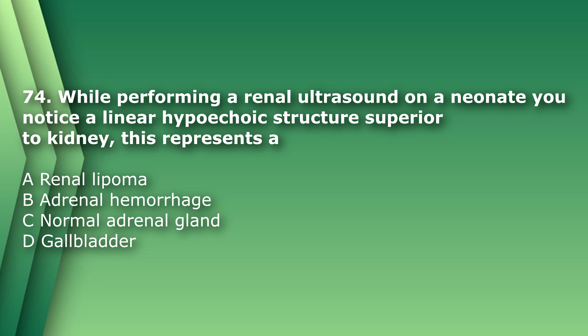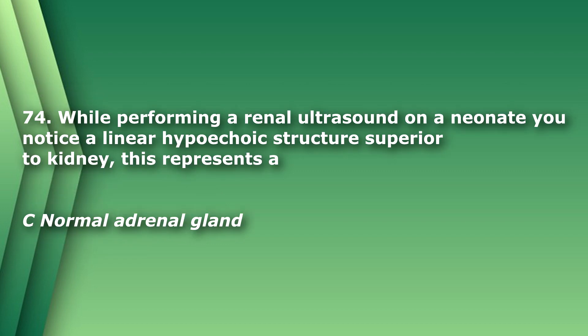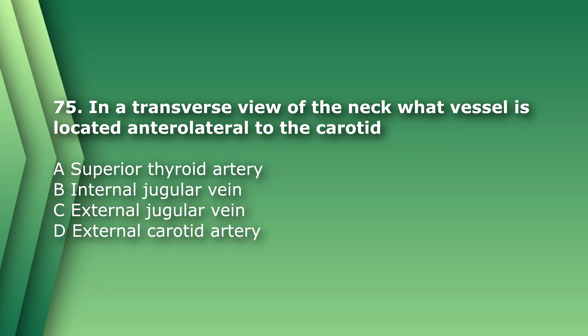Question 74: While doing a renal ultrasound on a neonate, you notice a linear hypoechoic structure superior to the kidney — this represents: A) renal lipoma, B) adrenal hemorrhage, C) normal adrenal gland, D) gallbladder. The answer is C, normal adrenal gland, which is routinely seen in neonates. An adrenal hemorrhage would be larger, more round, hypoechoic, and/or heterogeneous.